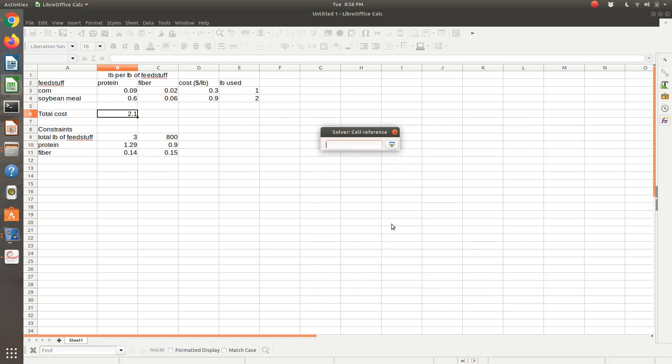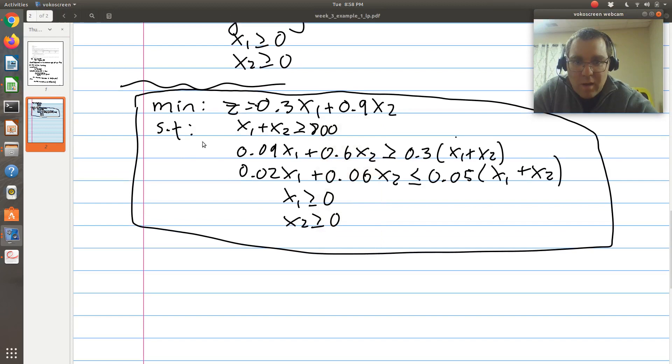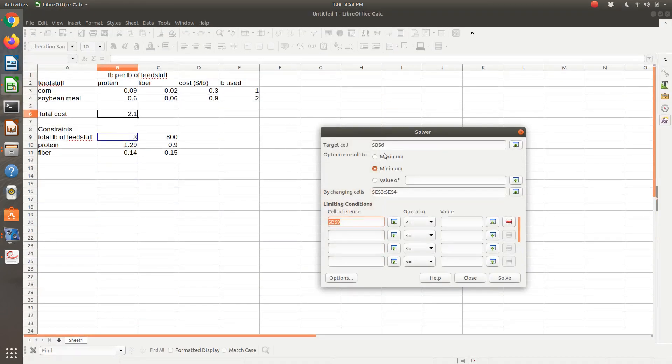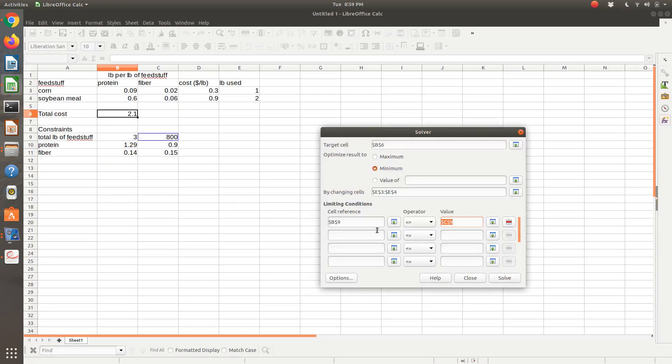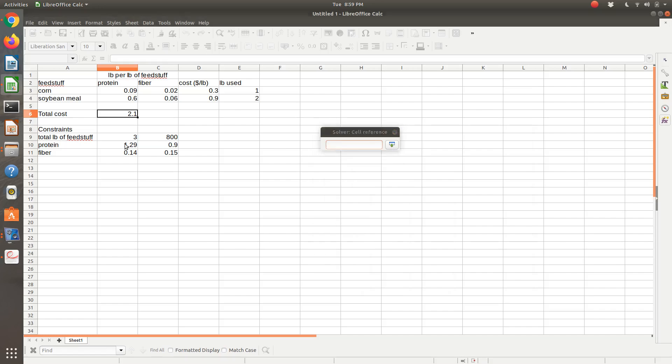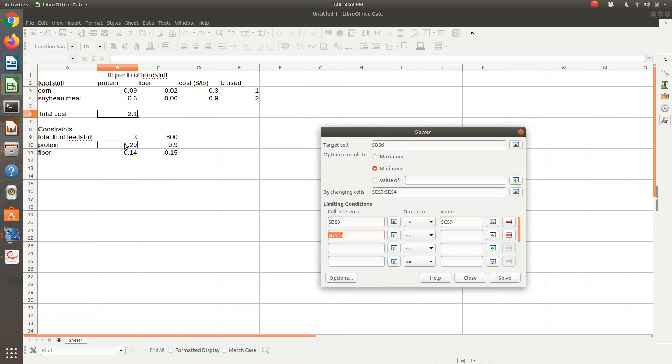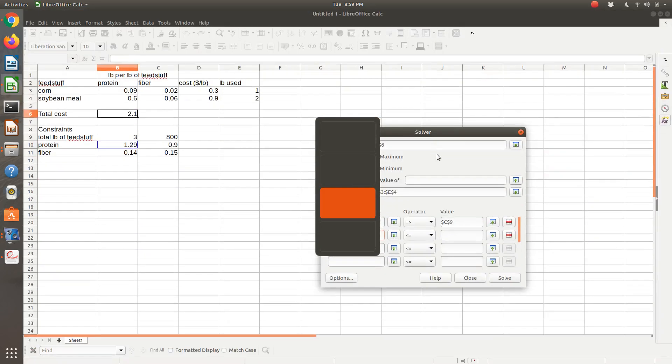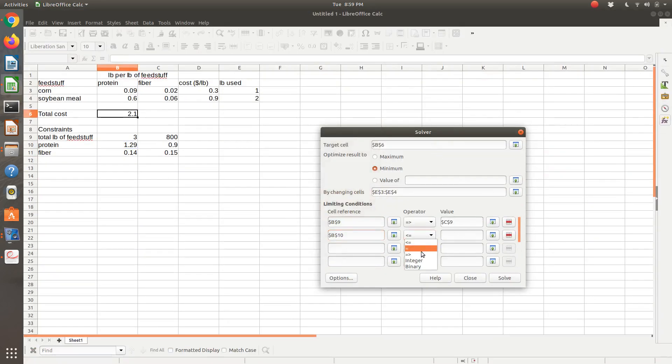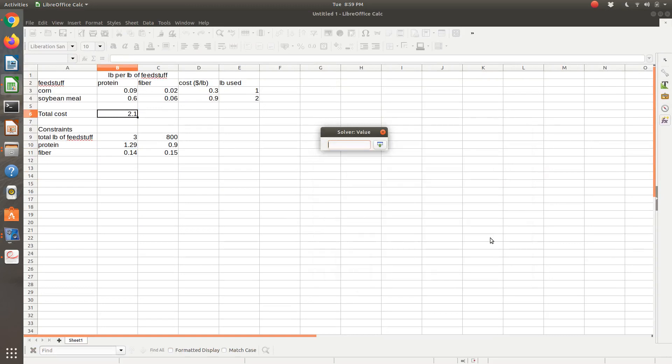Then to apply my constraints, so my total pound of each feedstock, the left-hand side, my left-hand side has to be greater than or equal to 800. I need to make at least 800 pounds. Next, my protein, this left-hand side is greater than or equal to the right-hand side.